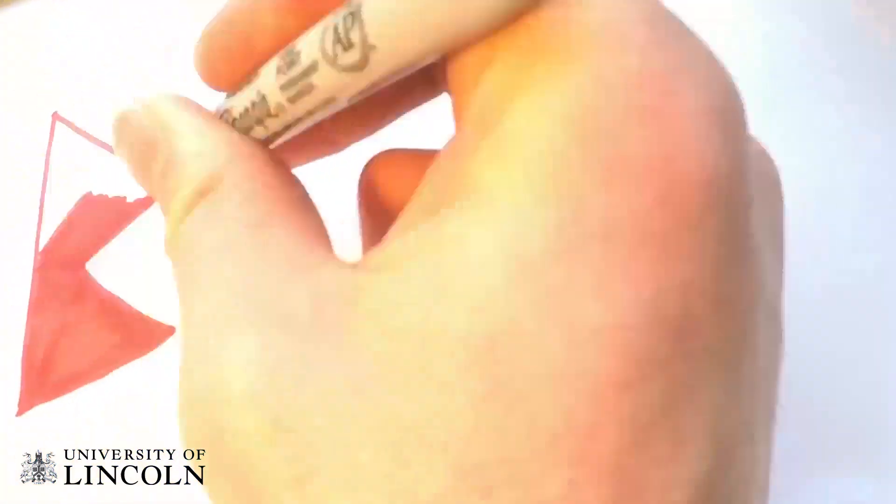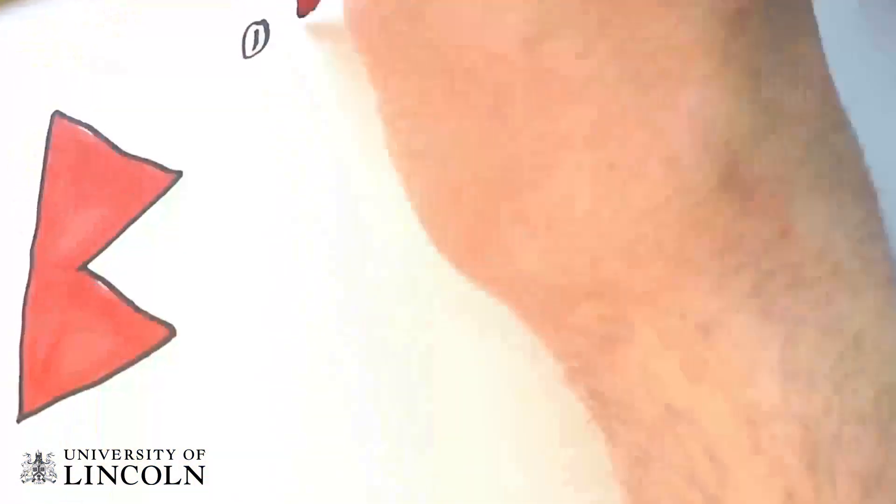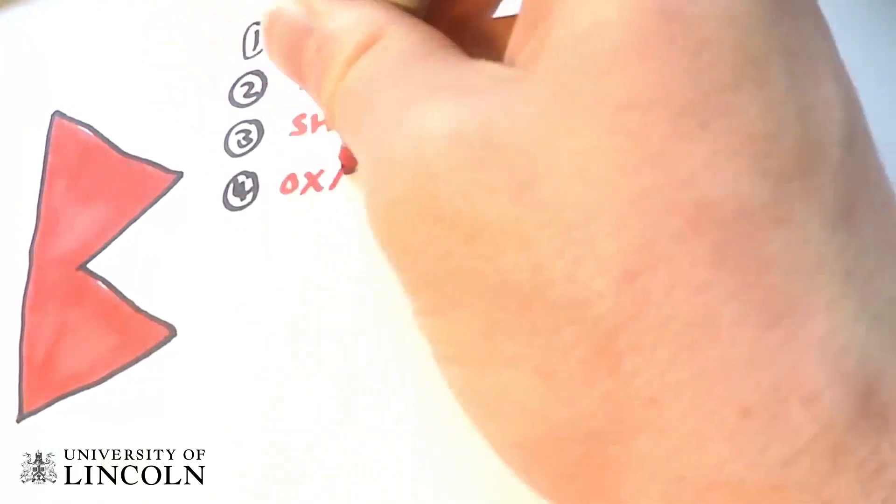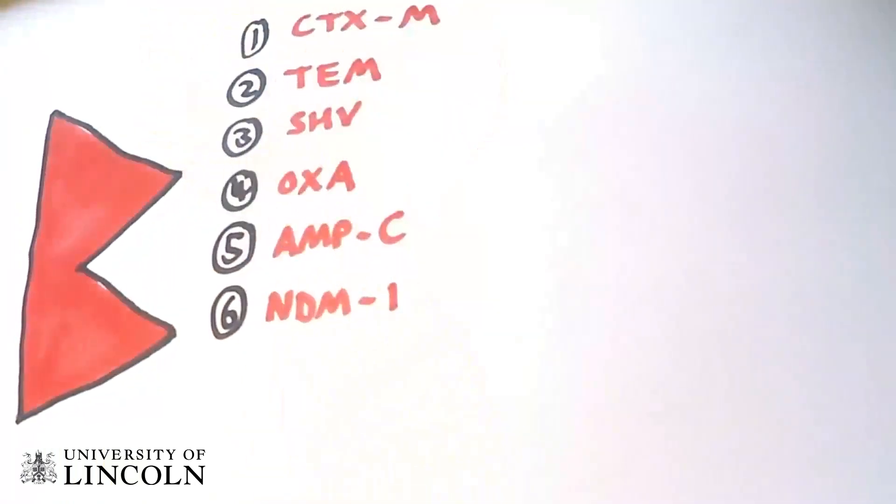There are multiple different types of beta-lactamase enzymes. These include CTX-M, TEM, SHV, OXA, AMP-C, and NDM-1.